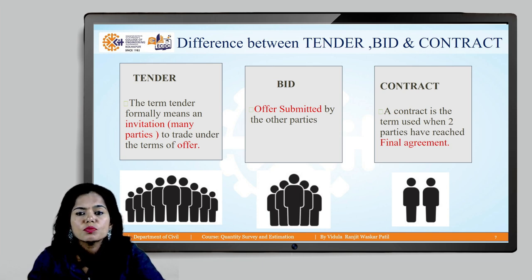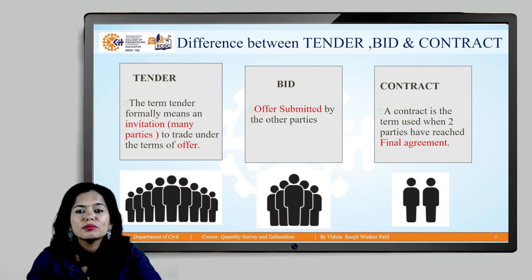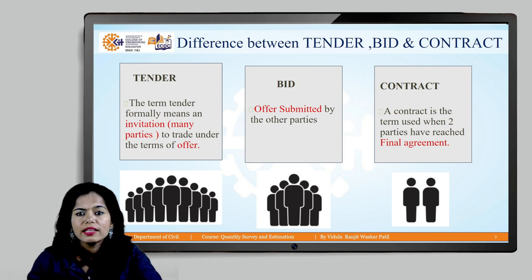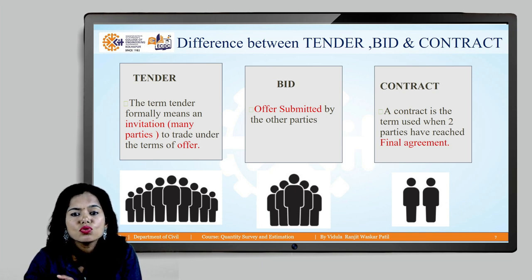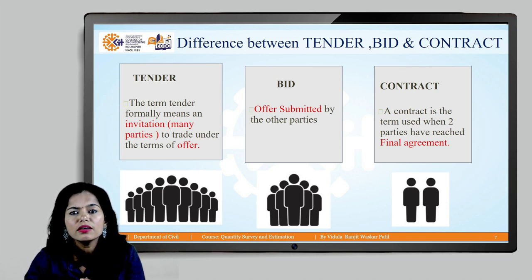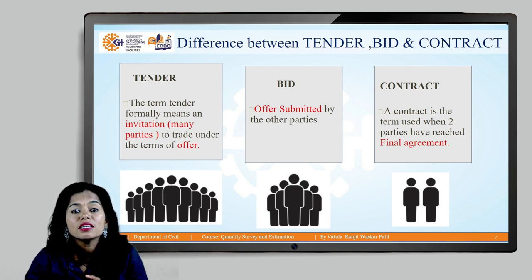Among the 25 to 30 contractors, we have to finalize one and award that project to them to execute the construction work. Contract is the final terminology — here, only two parties, the employer and the contractor, come and make a final agreement. The same document remains across tender, bid, and contract, but only the chosen contractor's document becomes the contract document. So: tender is a proposal document, bid is the offer submitted, and contract is the final agreement.